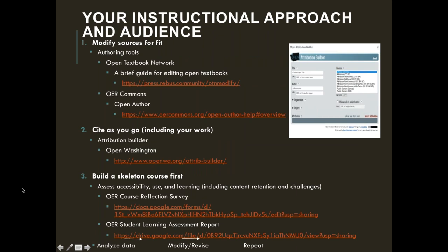The three main things I learned: first, make sure you're modifying your sources to fit. Second — the biggest mistake I made over four years — I was finding materials and putting them in folders without making a clear attribution for when I shared those materials back out. I always recommend now that when you find something you're going to integrate, you make the attribution right then and there. We use the Open Washington tool, which you can embed in your learning management system so you don't have to leave Canvas to access it.